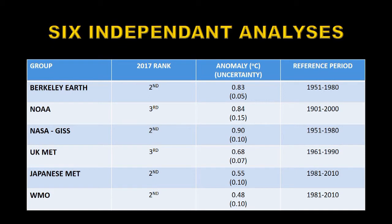Here are the results from the six main analysis groups worldwide: Berkeley Earth, NOAA, NASA, the UK Met Office, the Japanese Met Office, and the World Meteorological Organization. The analysis techniques are different, and one of the differences is the reference period. Berkeley Earth uses 1951 to 1980, NOAA uses 1901 to 2000 (i.e. the 20th century average), and the Japanese Met and World Meteorological Organization used 1981 to 2010.